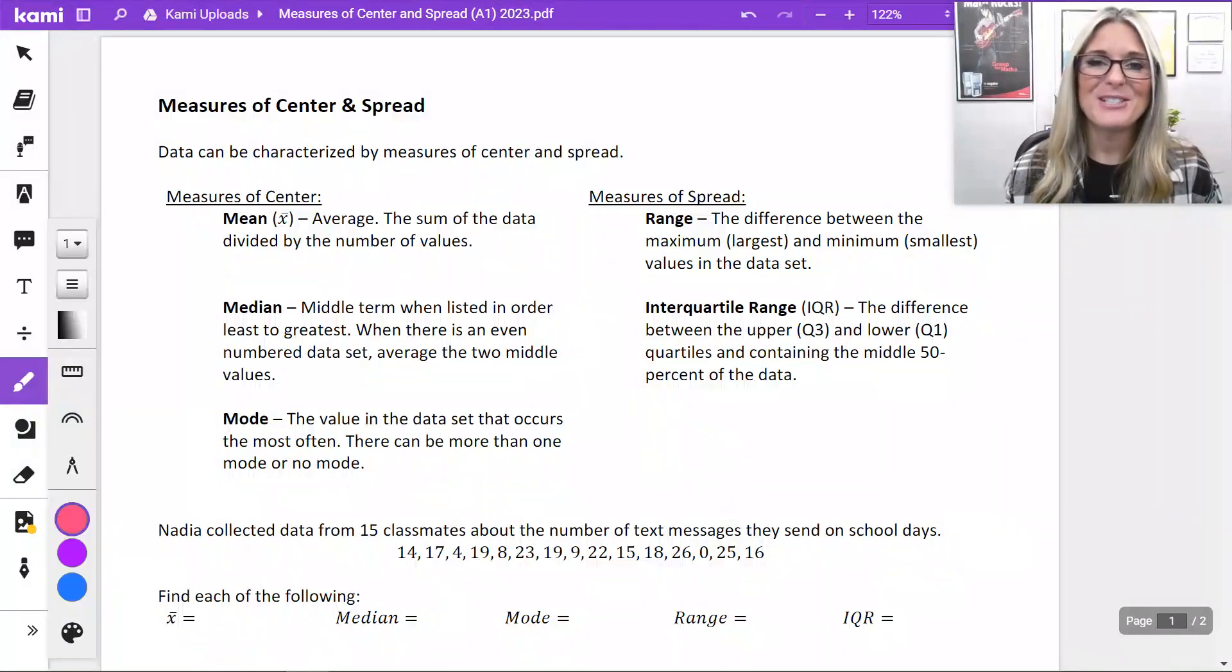Today, we're going to look at measures of center and spread. Data can be categorized by measures of center and spread. Measures of center are things like mean, and what might be new to you is the symbol we use to represent mean, an X with a bar over it. Of course, mean is our average, so if you wanted to find it by hand, you would add all of your data values together and divide by the number of values in that data set.